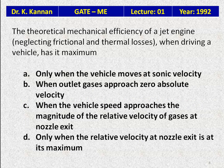Question 7: The theoretical mechanical efficiency of a jet engine neglecting frictional and thermal losses when driving a vehicle has its maximum value — A: when the vehicle moves at sonic velocity; B: when outlet gases approach zero absolute velocity; C: when the vehicle speed approaches the magnitude of relative velocity of gases at nozzle exit; D: when relative velocity at nozzle exit is at its maximum. The answer is C — when the vehicle speed approaches the magnitude of relative velocity of the gases at the nozzle exit.